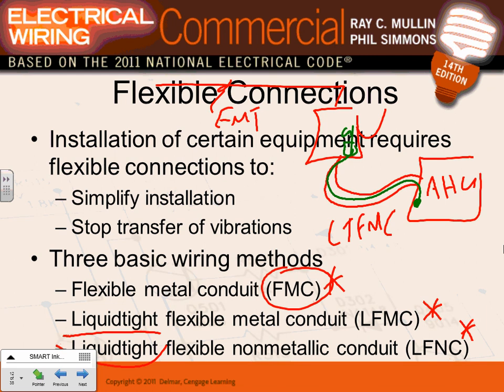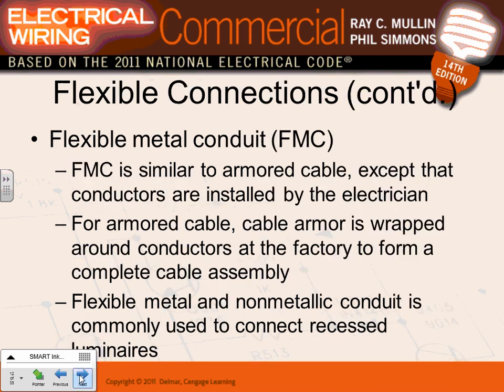That's your flexible conduit - use it to tie to equipment, whether fixtures or mechanical equipment. A couple of things about flexible metallic conduit: it looks like MC cable without conductors inside it. You put conductors in it and it effectively becomes MC cable. Flexible metallic conduit is commonly used to connect recessed lighting fixtures and mechanical equipment.